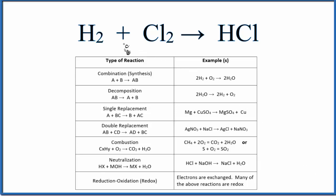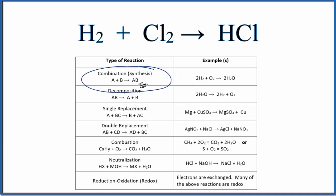In this video, we'll look at the type of reaction for H2 plus Cl2 gives us HCl. That's hydrogen gas plus chlorine gas giving us HCl. When we have two reactants come together to form one product, that's a combination or synthesis reaction. You can think of it as A plus B gives us AB.